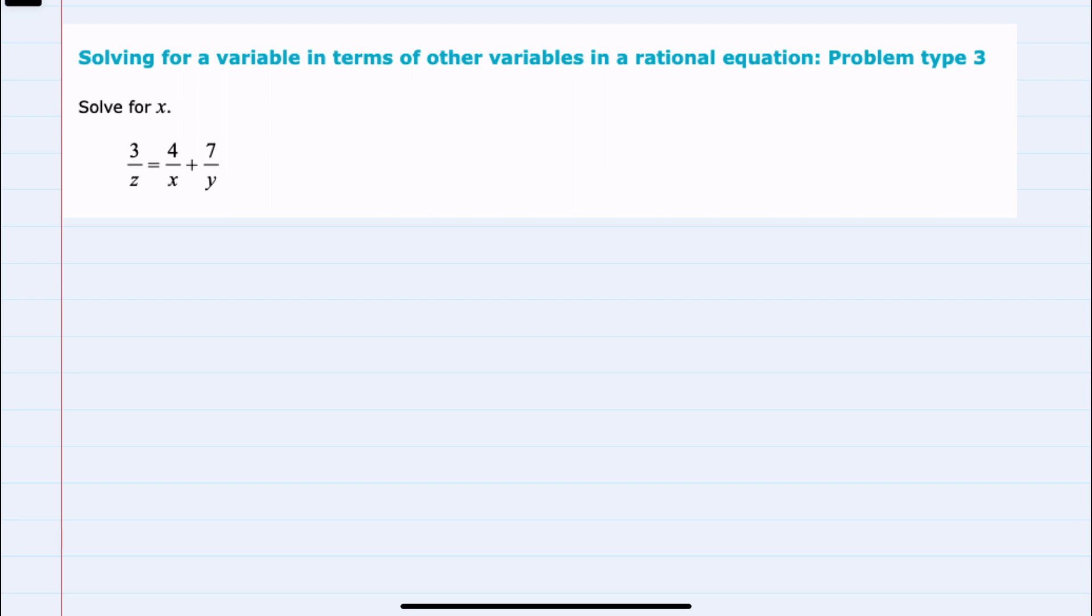We're asked to solve this equation for x. The first thing we notice is that our x is in the denominator. But as in other examples, when we have an equation with fractions and denominators, if we identify the lowest common denominator and multiply through by that LCD, we can eliminate all of those fractions.